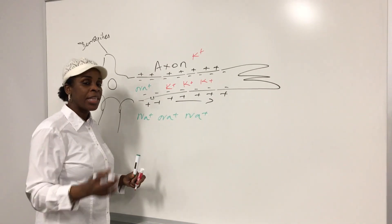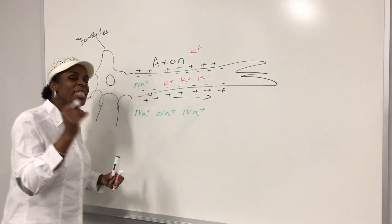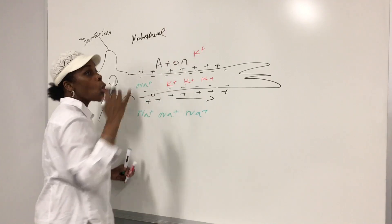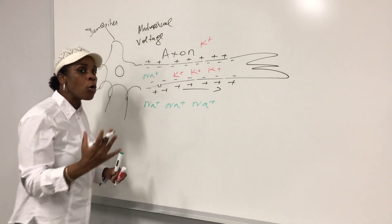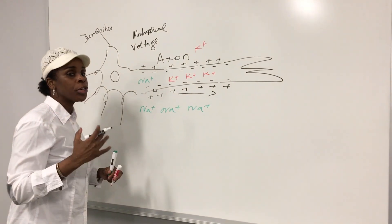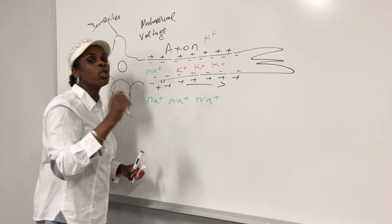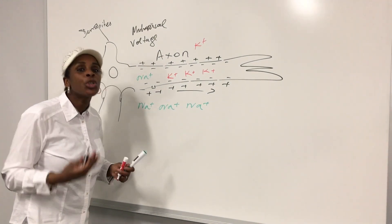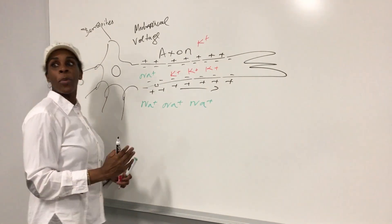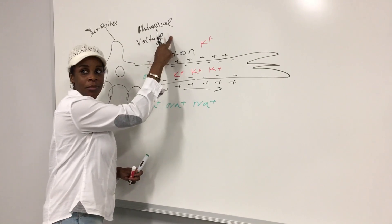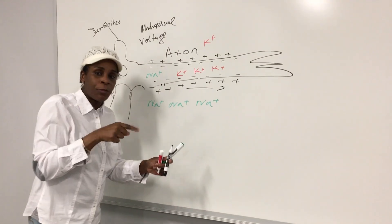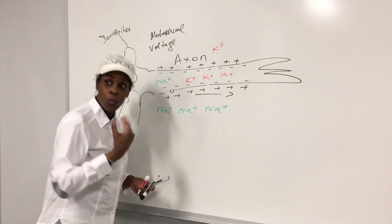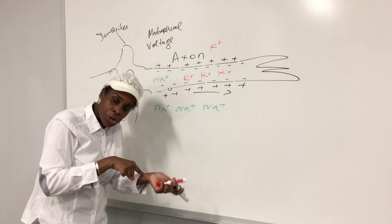These channels will not just open randomly — they open based on something. That something can be mechanical, meaning somebody has to put a force on it. Or it could be voltage — a voltage-gated channel means the electrical charge has to change in order for the gate to open, just like a key. If you make the charge positive or negative, the door will open — that is voltage gating. If it's mechanical gating, you actually have to touch it; for example, if you touch your skin, the pressure opens the gate and that's how you feel.